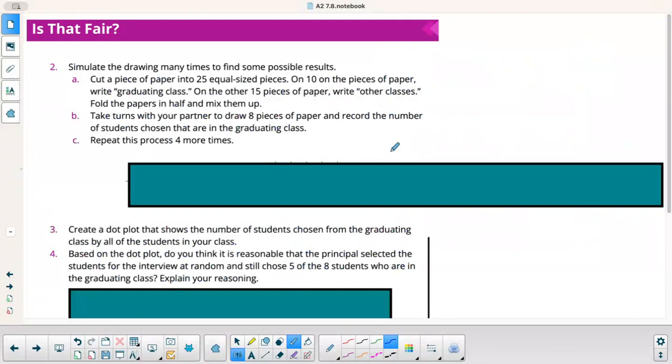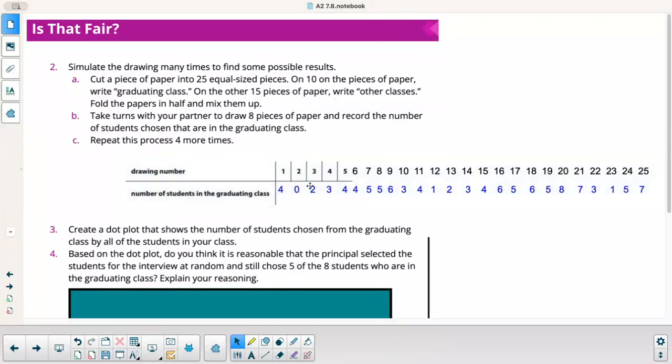Alright. Simulate the drawing many times to find some possible results. Cut a piece of paper into 25 equal size pieces. On 10 pieces of paper, write graduating class. And on the other 15 pieces of paper, write other classes. Pull the papers in half and mix them up. And then you'll take turns with your partner to each draw 8 and record the number of students chosen that are in the graduating class. Repeat this process four more times. So I went ahead and just simulated it here. I did it a bunch of times myself, and I wrote them out. I ended up having 25 different trials.